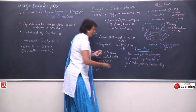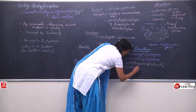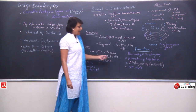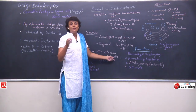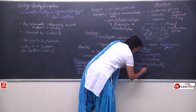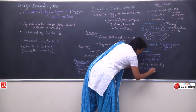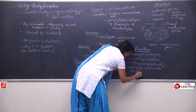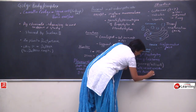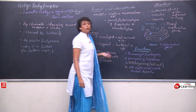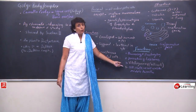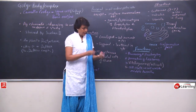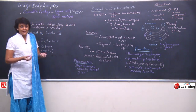Golgi body also helps in the formation of the cell plate during cell division, and this cell plate helps in the formation of the middle lamella and cell wall. The cell plate appears only at the time of cytokinesis, especially in plant cells where the cell wall and middle lamella are to be synthesized.